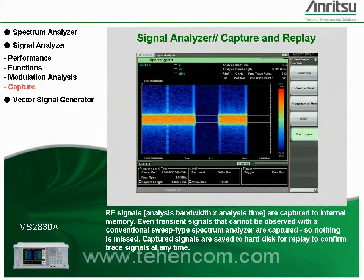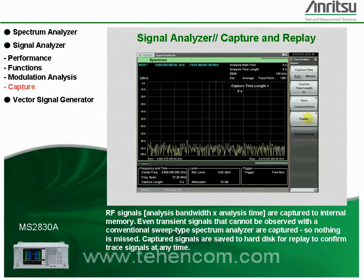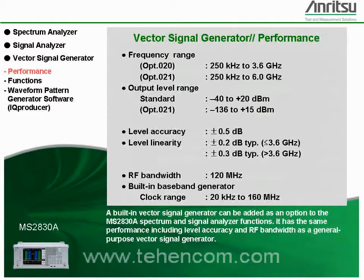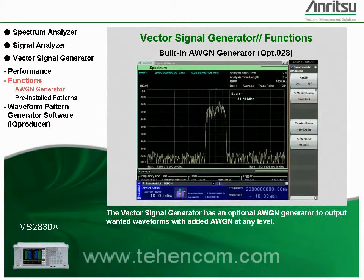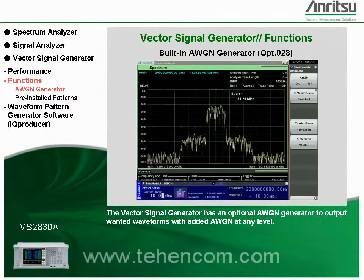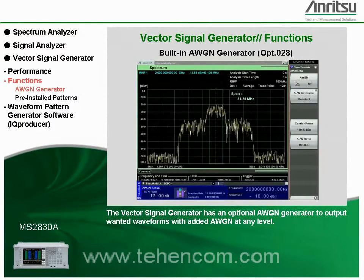Captured signals are saved to hard disk for replay to confirm trace signals at any time. A built-in vector signal generator can be added as an option to the MS2830A spectrum and signal analyzer functions. It has the same performance, including level accuracy and RF bandwidth, as a general-purpose vector signal generator. The vector signal generator function is based on arbitrary waveform memory with pre-installed general wireless communications waveform patterns. It also has an AWGN generator option for measurements with different carrier-to-noise ratios.